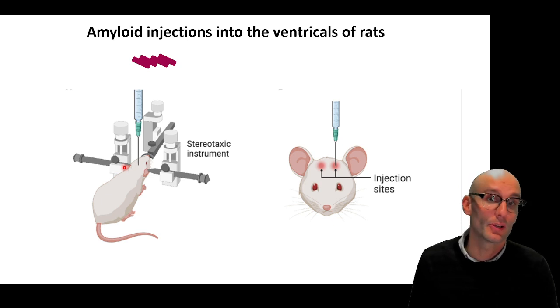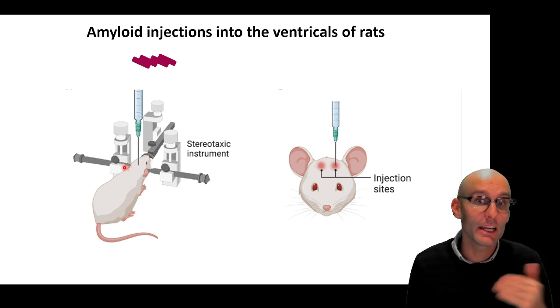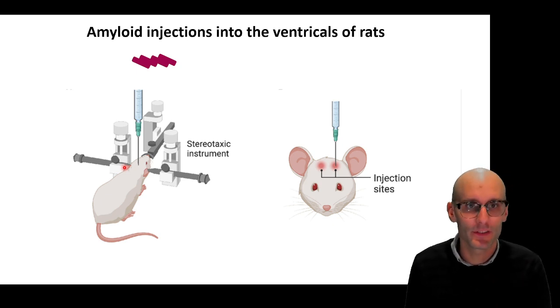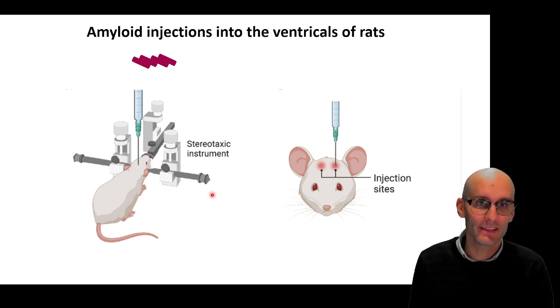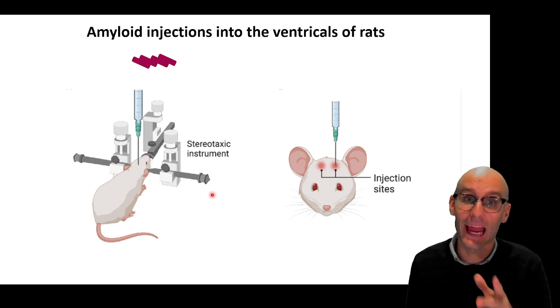Then we inject a high dose of amyloid, and that will very rapidly induce memory deficits and neuroinflammation in these animals. So we did this to the rats. And just after the injection, we gave our non-steroidal anti-inflammatories that we know inhibit the NLRP3 inflammasome, or we gave a placebo control.